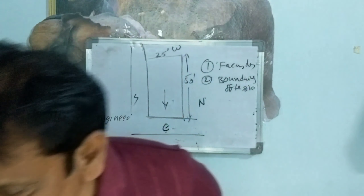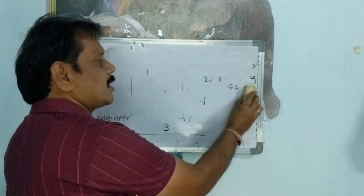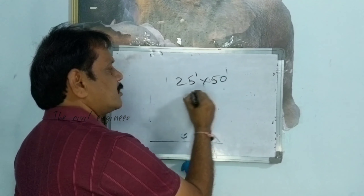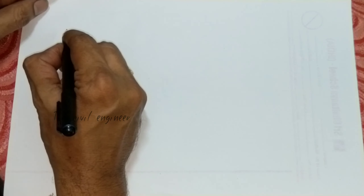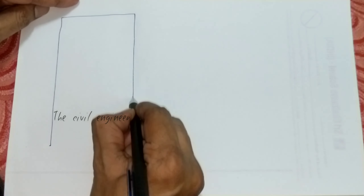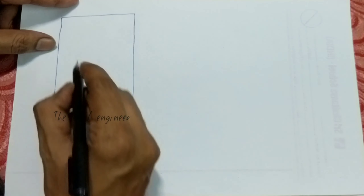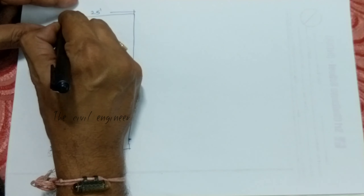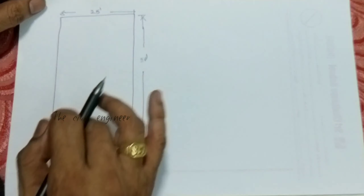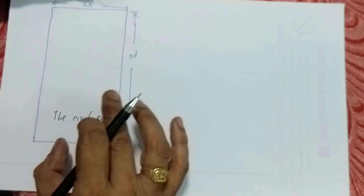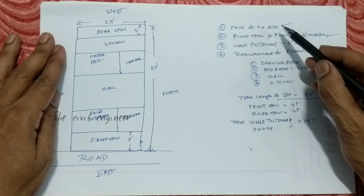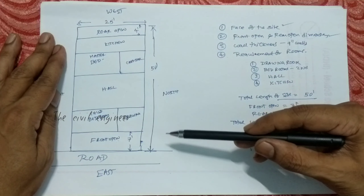In this session I will explain how you can draw a building plan for a 25 by 50 site — 25 feet by 50 feet. Suppose if you want to draw a building plan for a site of 25 feet width and 50 feet length, some points are to be kept in mind before drawing that plan. The first one is the facing of this site. Here in this case the face of the site is east.